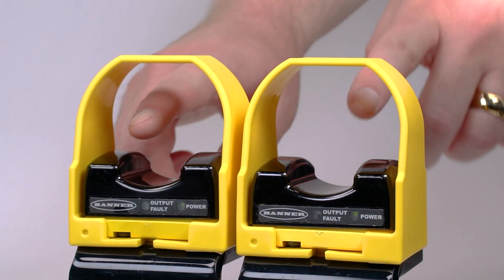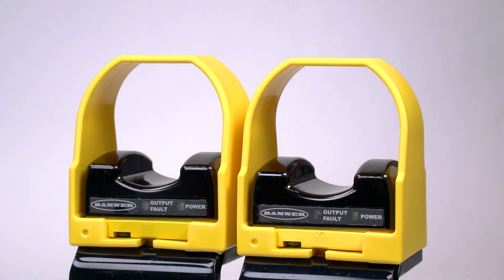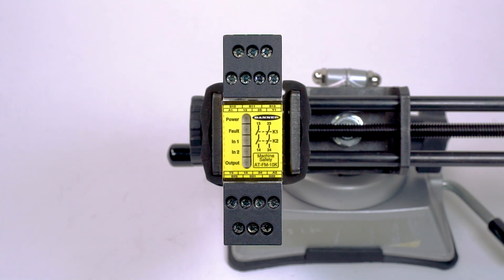For this example, we will be using a pair of STB VP6 touch buttons with complementary PNP outputs and we will wire it to the AT-FM-10K relay module.